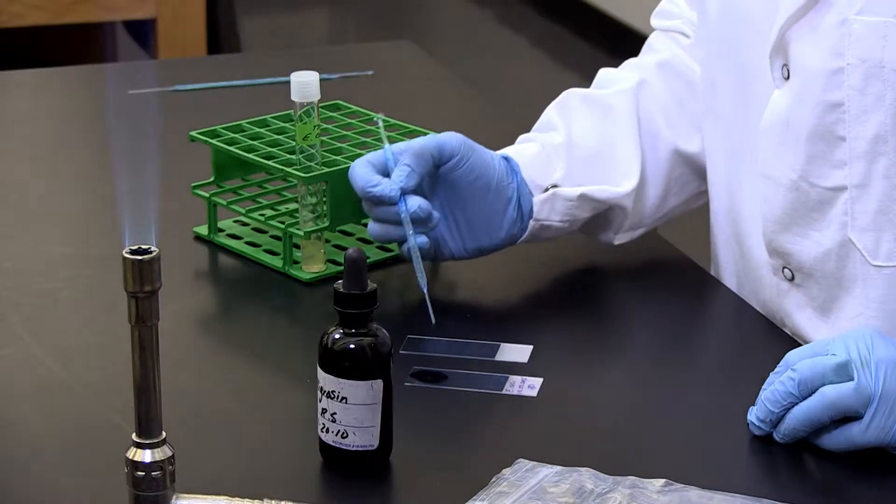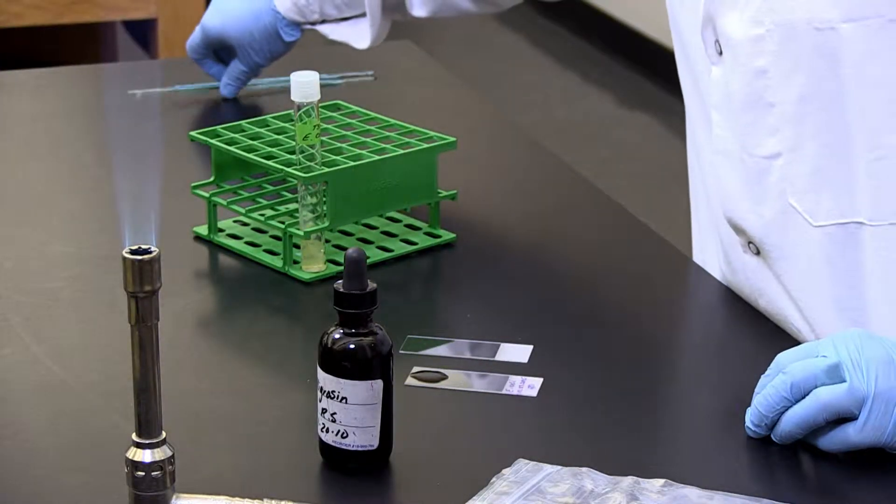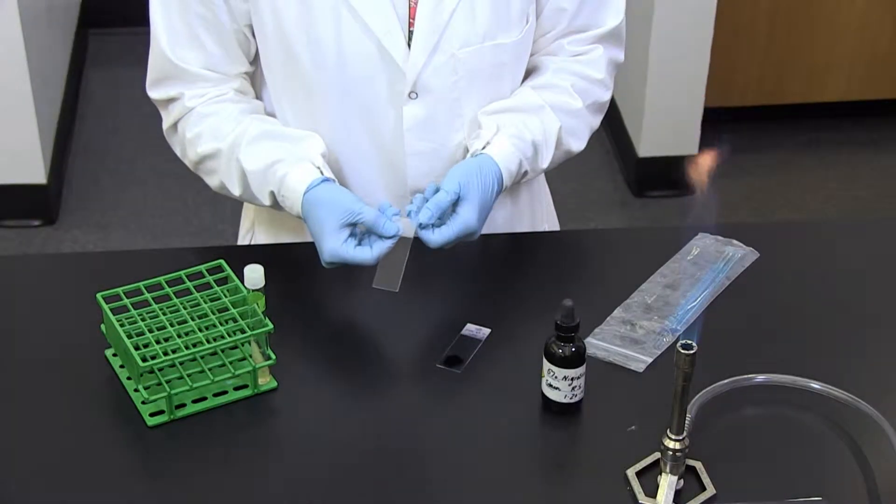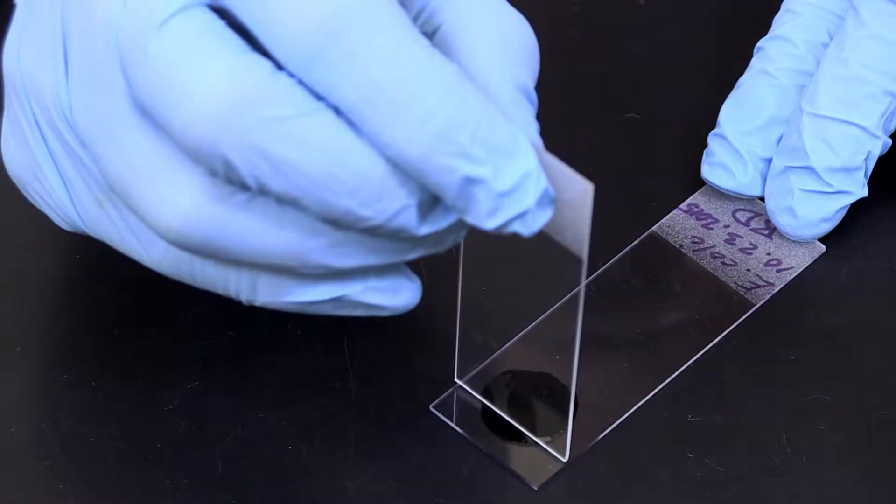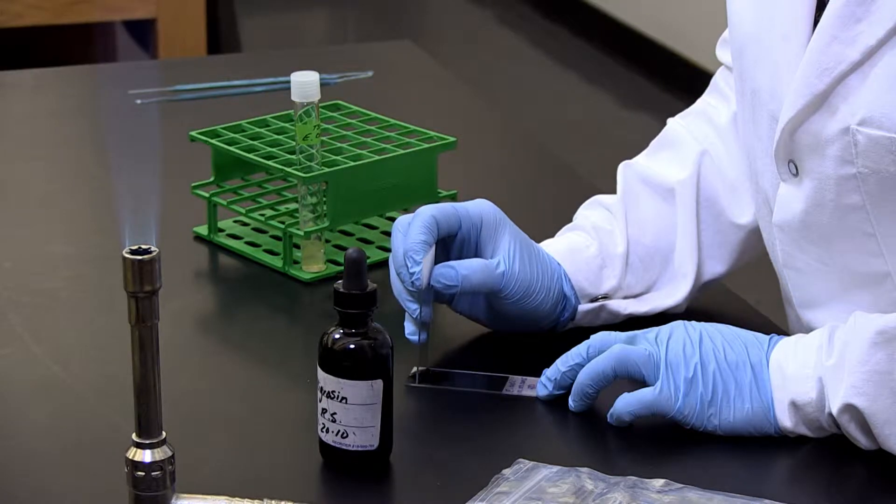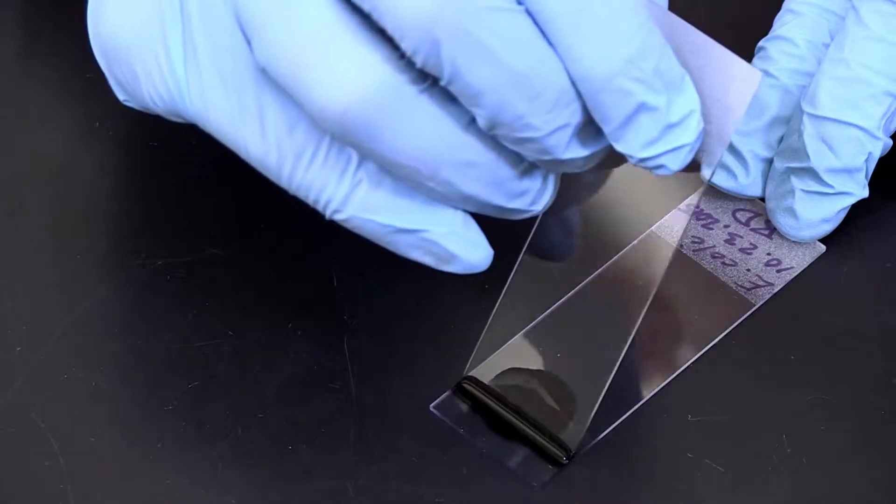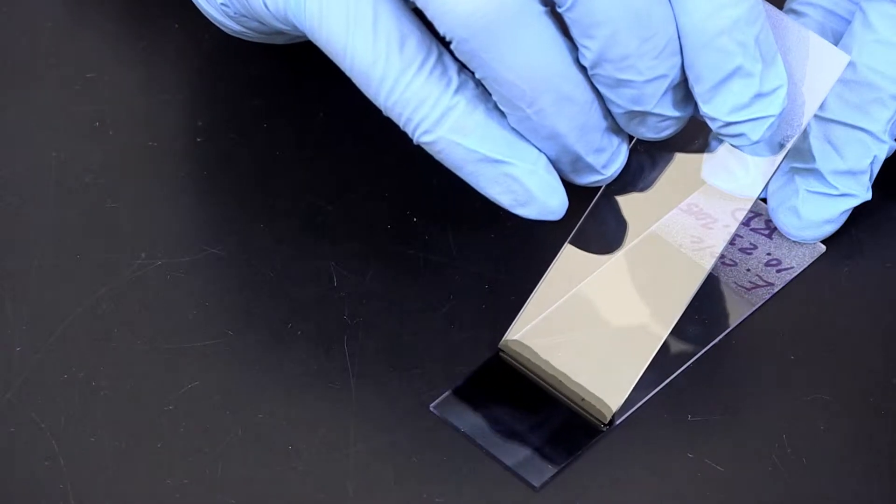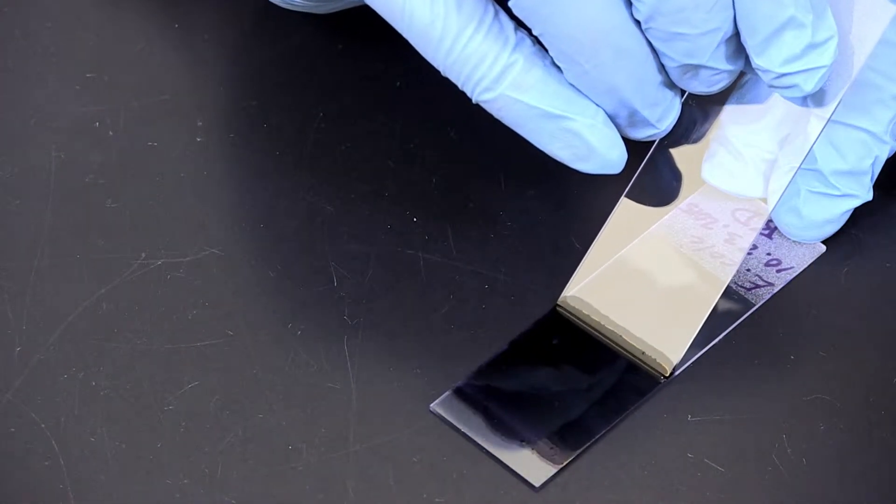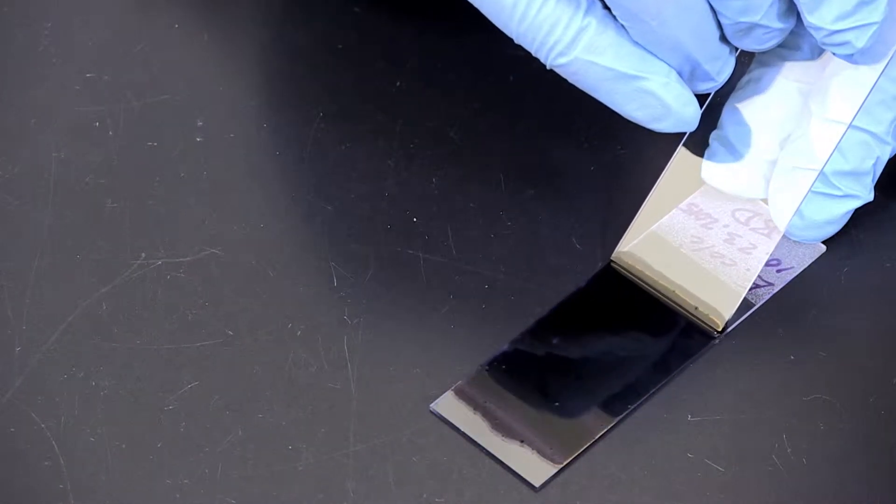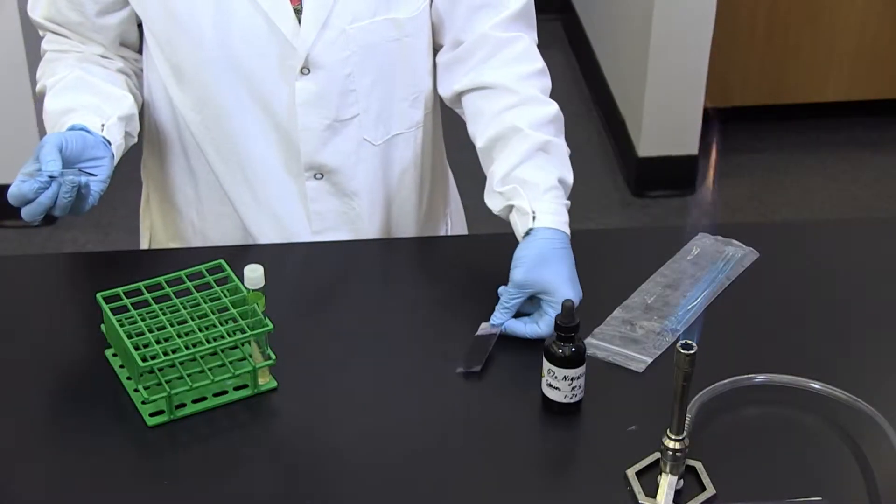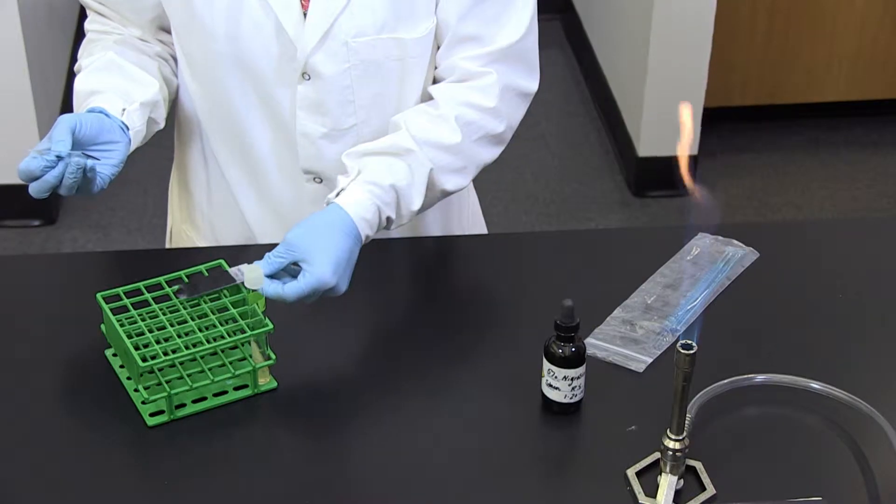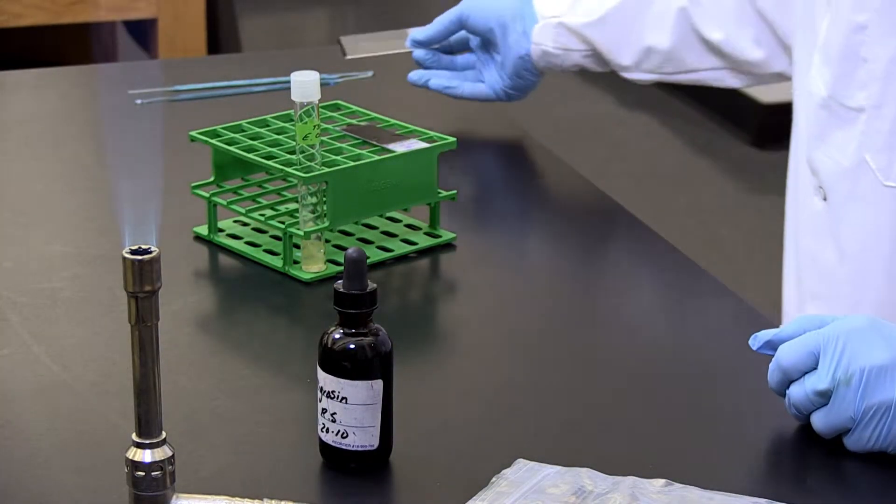Three, place a second slide in front of the drop and move the slide backward until it touches the dye, spreading the dye across the trailing edge of the spreader slide. Four, slide the spreader slide forward, dragging the suspension of bacterial cells across it. This should result in a smear that is quite thick at one end and very thin at the other. Five, allow the slide to air dry for five to ten minutes. Six, examine the slide under oil immersion.